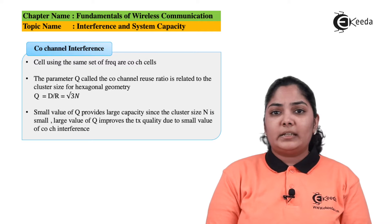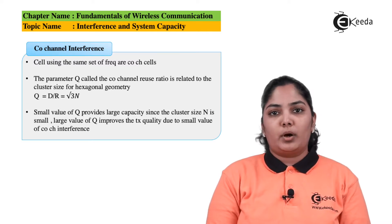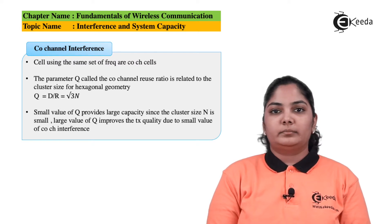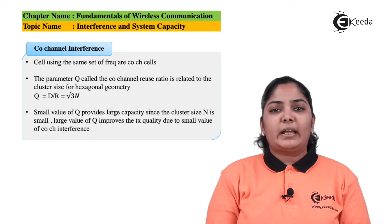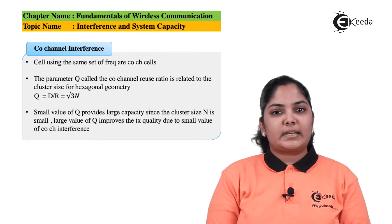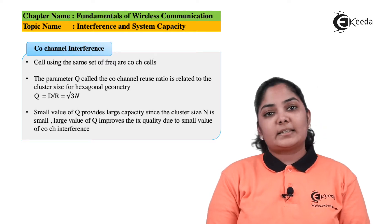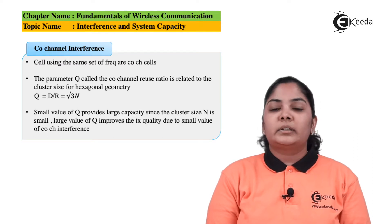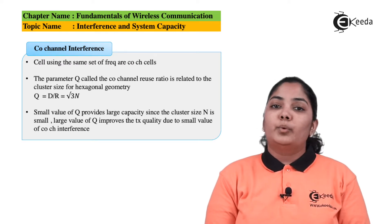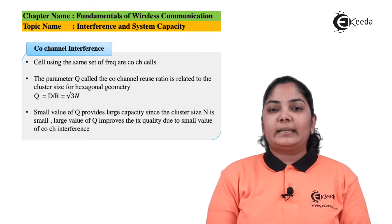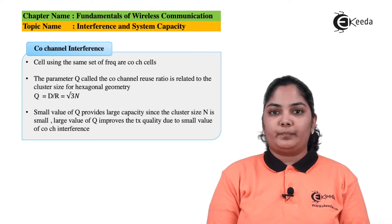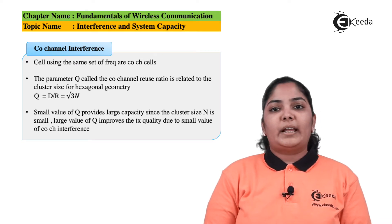When the number of cells in a cluster N is small, every cell is given a larger number of the available channels. For example, if N is very large, every individual cell gets fewer channels, hence less capacity. If Q is small, N is also small, which means every cell gets a higher portion of channels, increasing the capacity of the system.